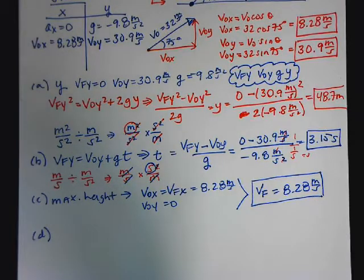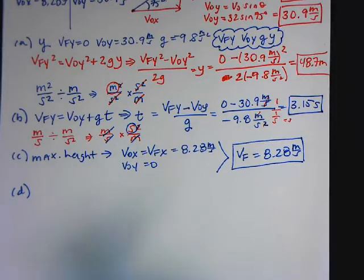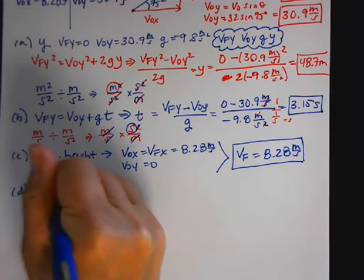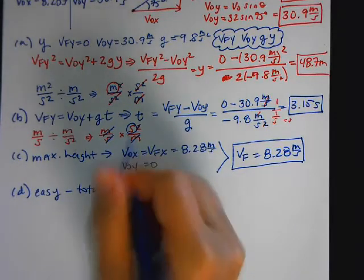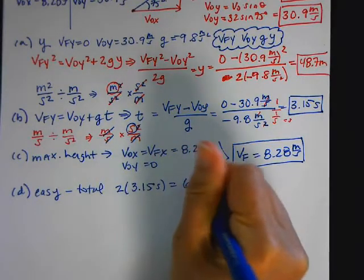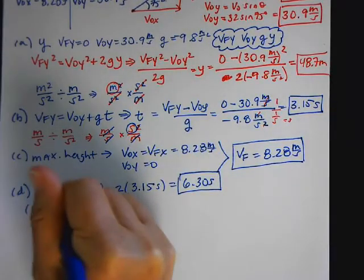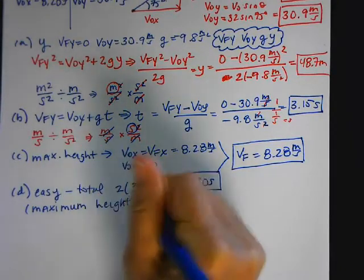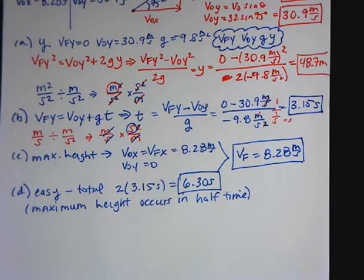Part D says determine the total flight time to reach the original launch height — basically the total time in the air. There are many ways to do this. The easiest way: we know that maximum height occurs at half the total time, so total time equals 2 times 3.15, which is 6.30 seconds.